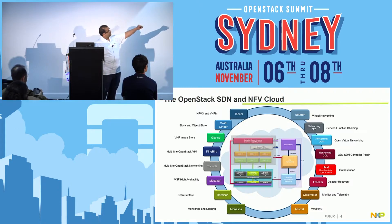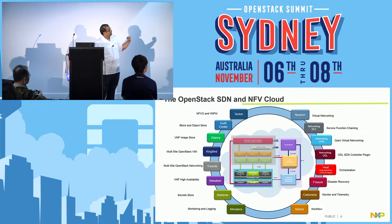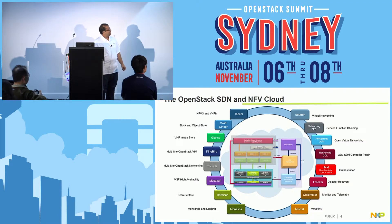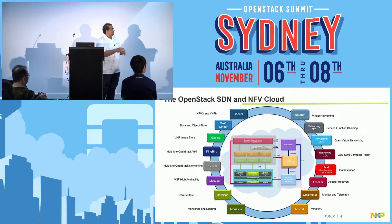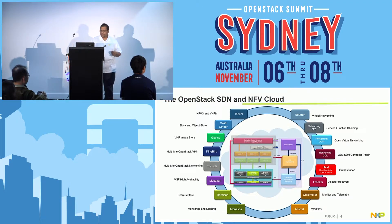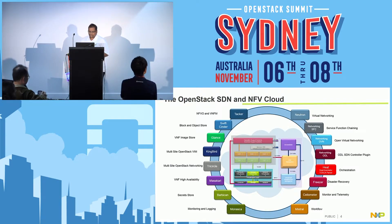At the top we have Neutron, the virtual networking component, with sub-projects for networking SFC, networking OVN, and networking ODL. We have Heat that orchestrates these VNFs where TACKER is used. We also have workflow and secure store capabilities. These projects provide the complete solution today for SDN and NFV cloud.